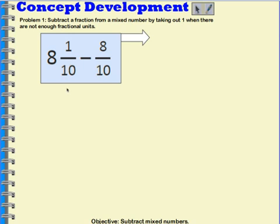Okay, so in this example, we have 8 and 1 tenth minus 8 tenths. So right away I can see that I don't have enough tenths to subtract 8 tenths. I'm going to use a number bond to break this up so that I can subtract my 8 tenths.